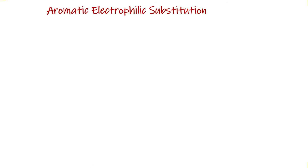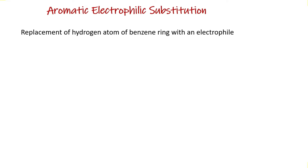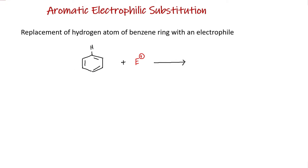What is aromatic electrophilic substitution? The replacement of a hydrogen atom of a benzene ring with an electrophile is generally referred to as aromatic electrophilic substitution reaction. If we take benzene, it has 6 hydrogens and all 6 hydrogens are equivalent. When you treat it with an electrophile, one of the hydrogen atoms of benzene gets replaced with the electrophilic group.